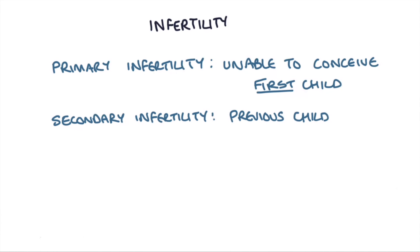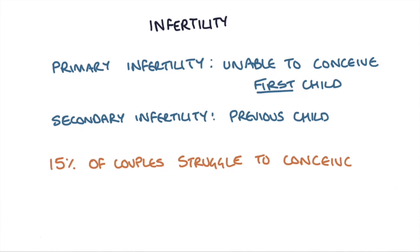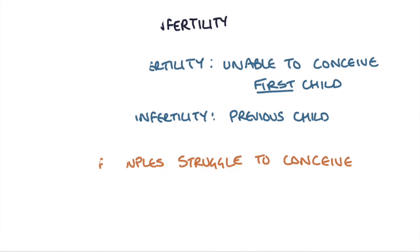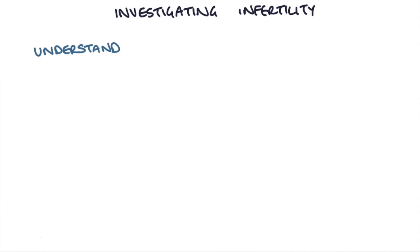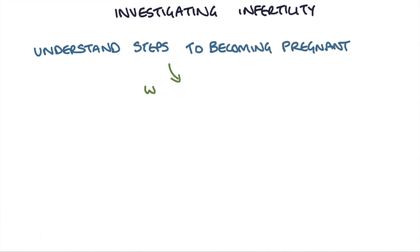Overall, around 15% of couples struggle to conceive. The key to investigating and managing infertility is to establish the cause. The best way to understand the causes is to think of all the steps involved in becoming pregnant and where there can be a problem.